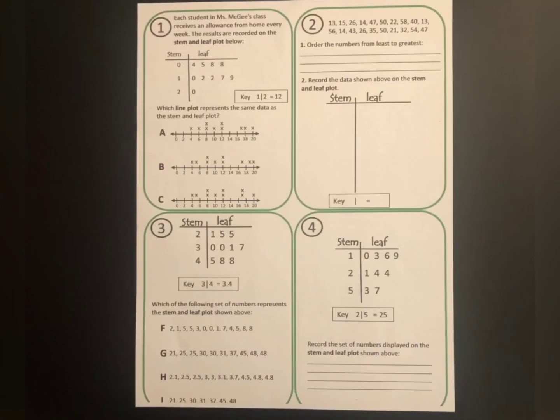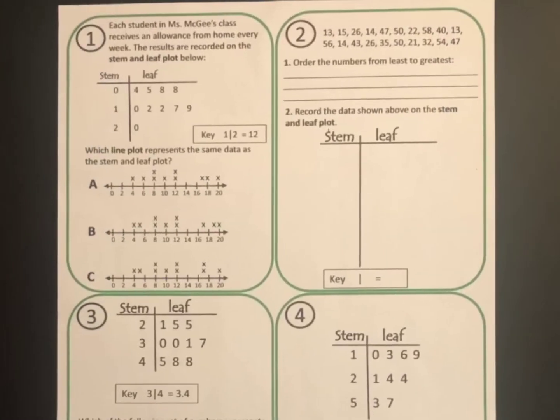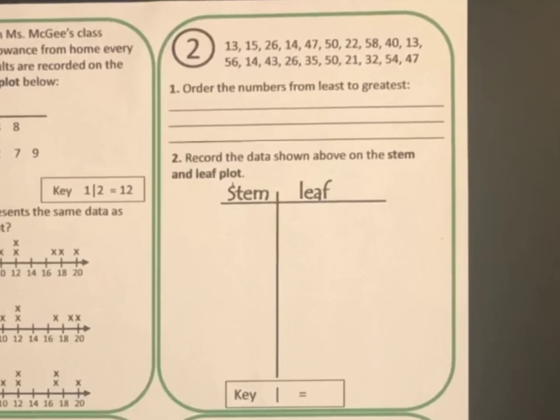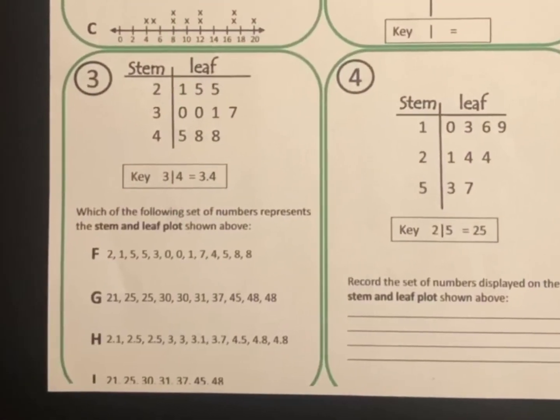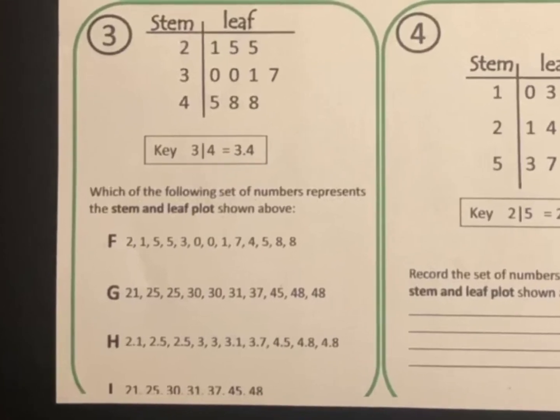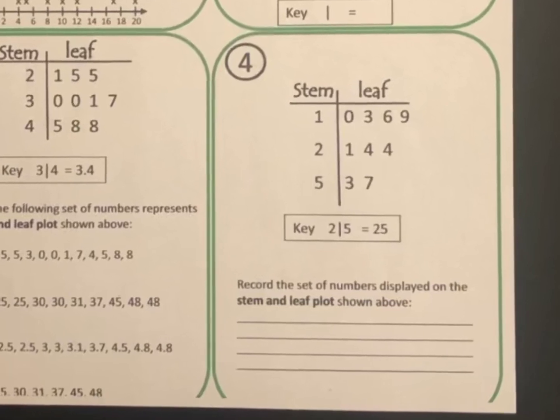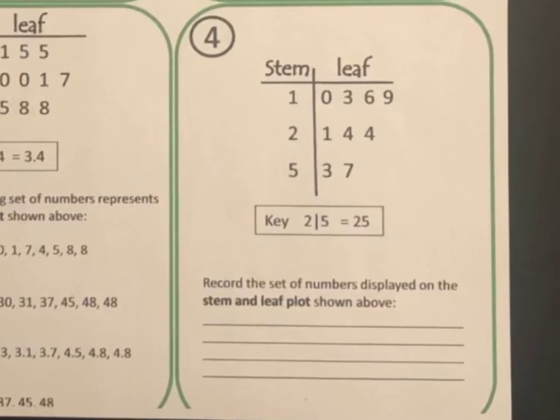Don't forget the parts of the assignment you still need to do. We finished number 1 together. Number 2, you still have some more numbers to write in your stem and leaf plot. Number 3, you need to choose the answer on the bottom. And number 4, you need to finish writing all of the numbers on the line.